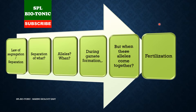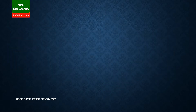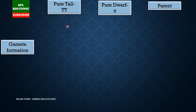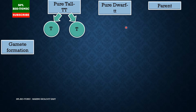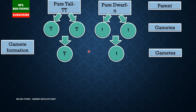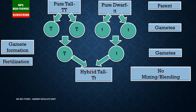Let us understand the law of segregation with an example. When we cross a pure tall pea plant with a pure dwarf pea plant, the first parent forms two gametes and the second parent forms two gametes. The first gamete contains the capital T allele and the second gamete contains the small t allele.